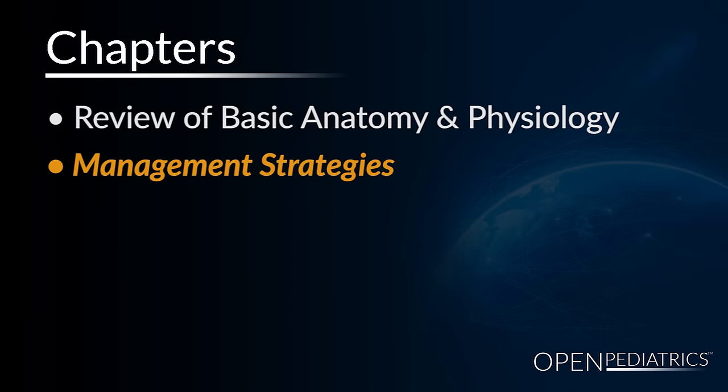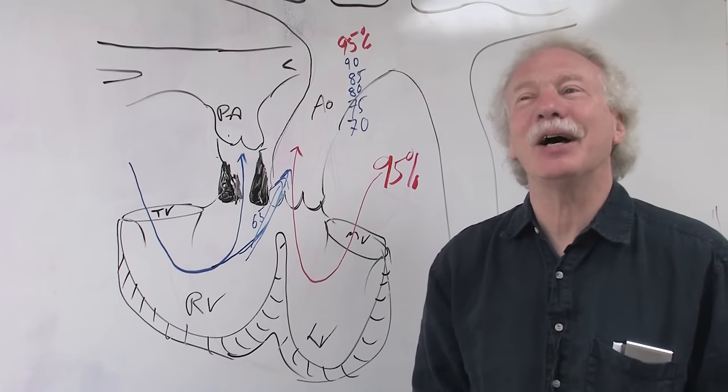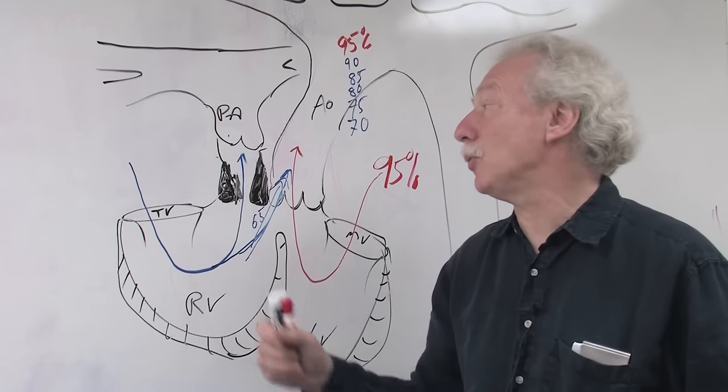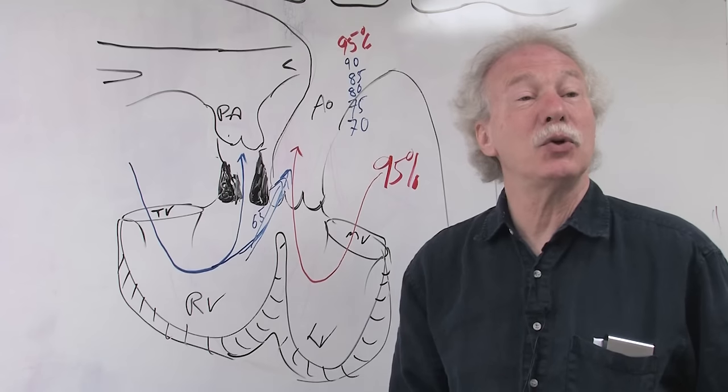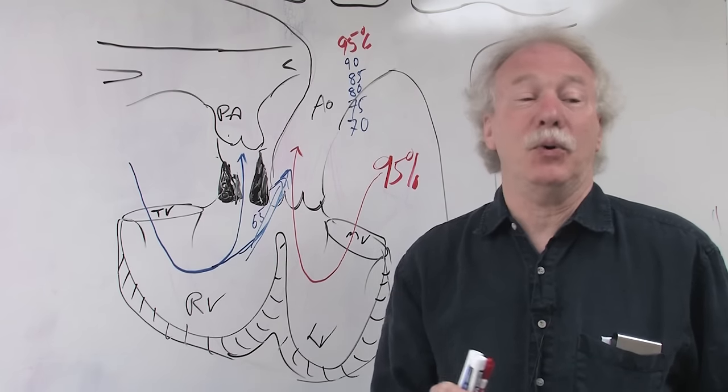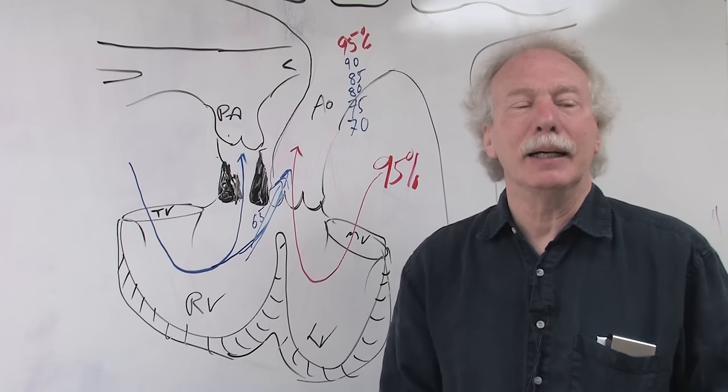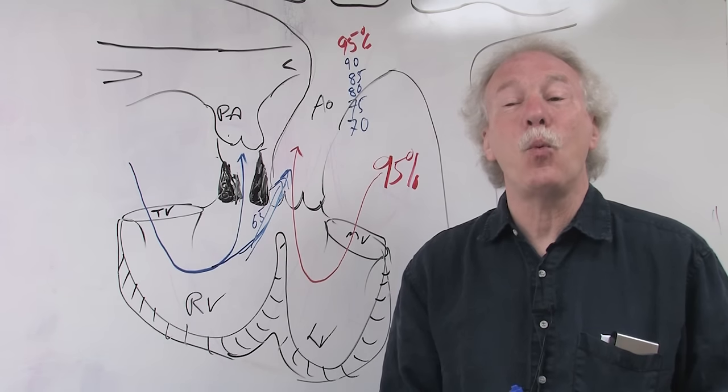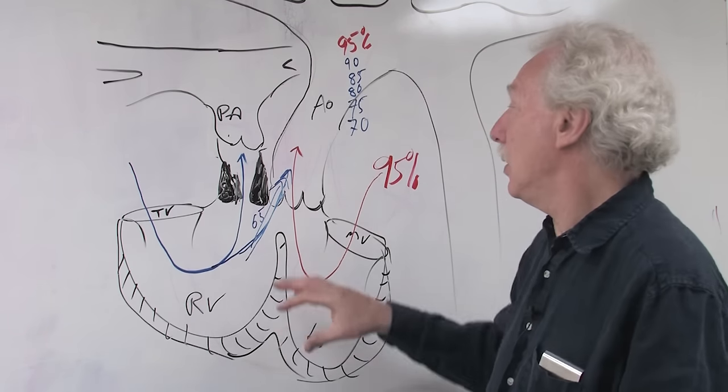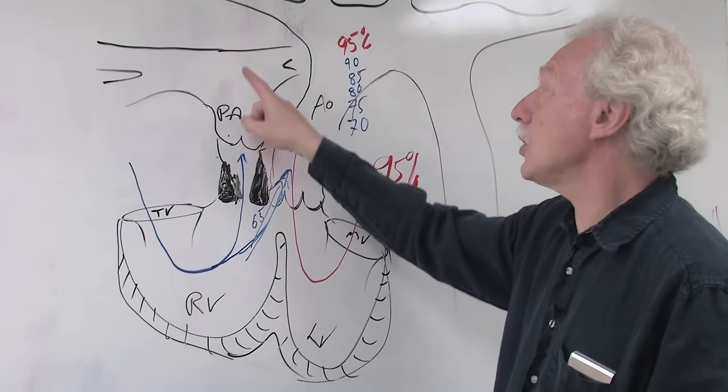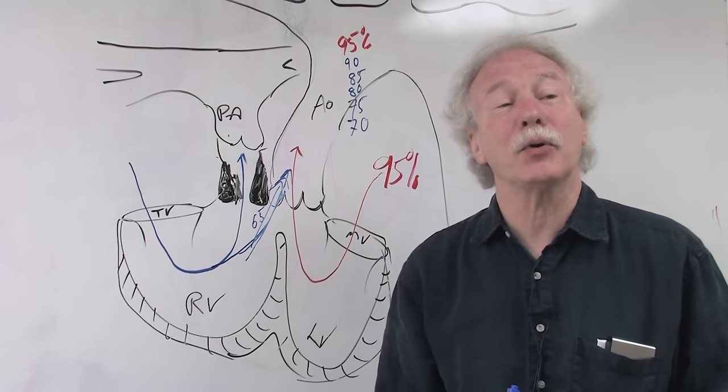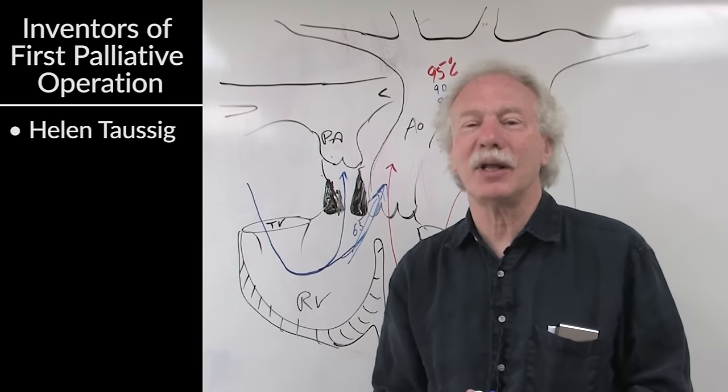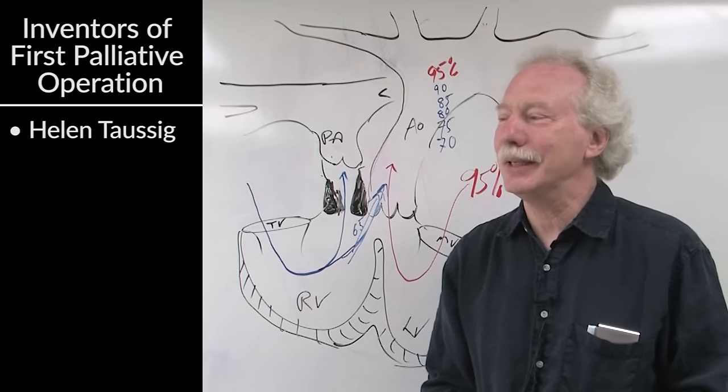Management strategies. In the bad old days, in the 1920s and 30s and earlier when people recognized tetralogy of Fallot, they didn't have much to do about it. The breakthrough came in the days before effective cardiopulmonary bypass, where it was recognized that there just wasn't enough blood flow getting to the pulmonary arteries. In an innovative concept, cardiologist Helen Taussig and surgeon Alfred Blalock and a surgical technician developed an operation to augment pulmonary blood flow.